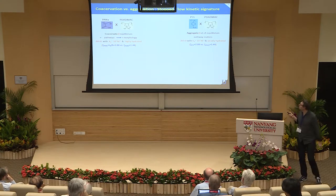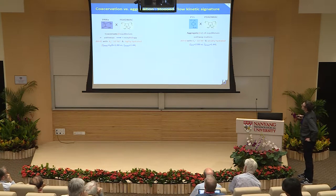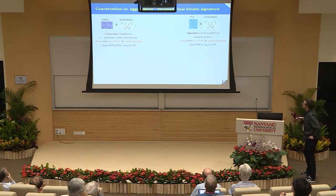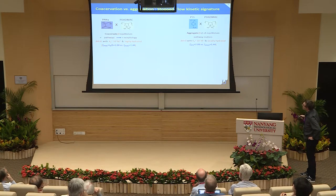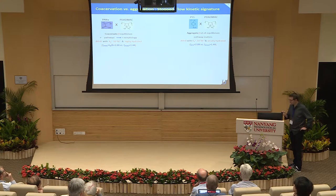These are the two systems we are basically working with recently. This one gives rise to a coacervate — it's a very commonly used system. And this one, the PSS-MAC, gives rise to aggregation. One is in equilibrium, one is out of equilibrium. If you look at the mixing parameters, they are completely equivalent on both sides, but the generated morphologies are completely different.